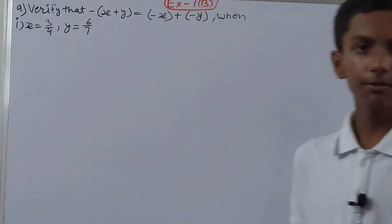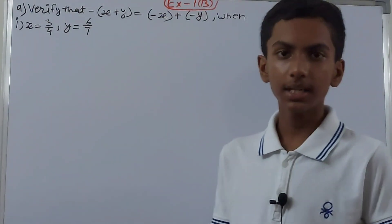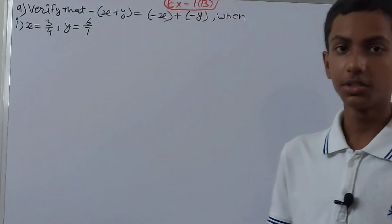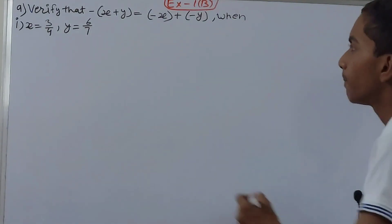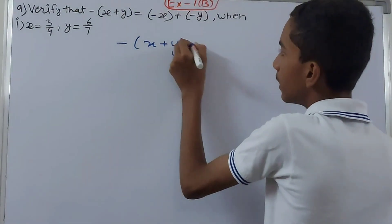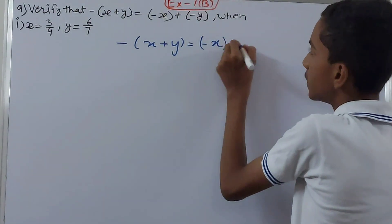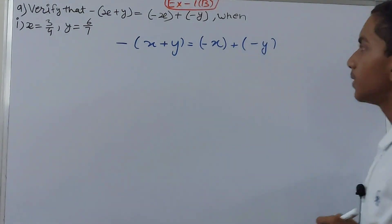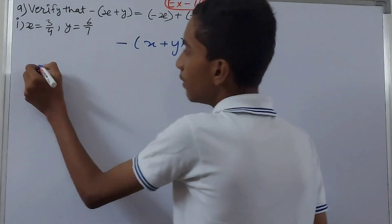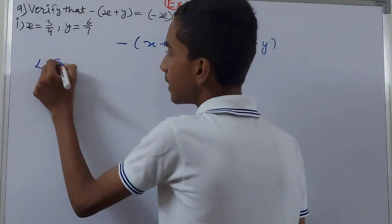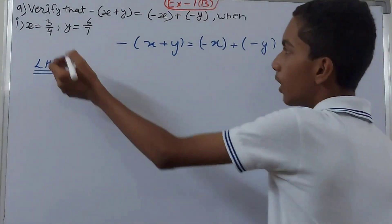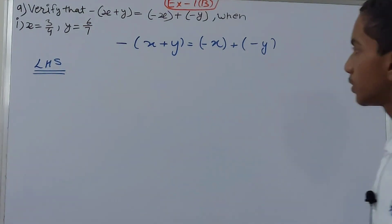In the previous question we verified that minus of (minus x) is equal to x. The same approach has to be done here, but the expression is different — we have x and y. We will solve both sides separately. First we move to the left hand side, where we have x = 3/4 and y = 6/7.